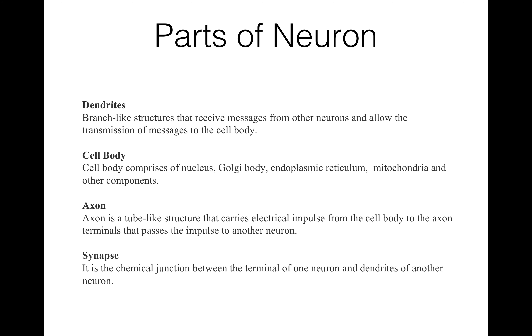Neurons consist of four basic parts: dendrites, cell body, axon, and synapse.